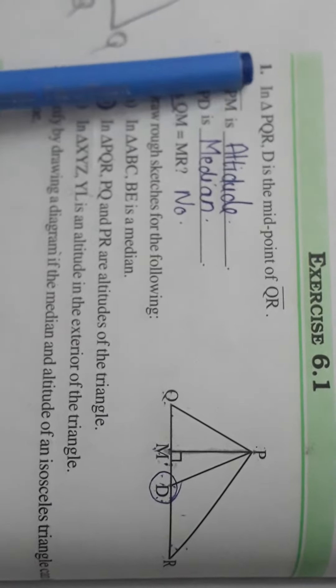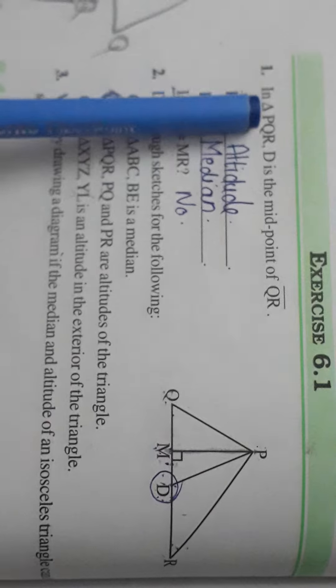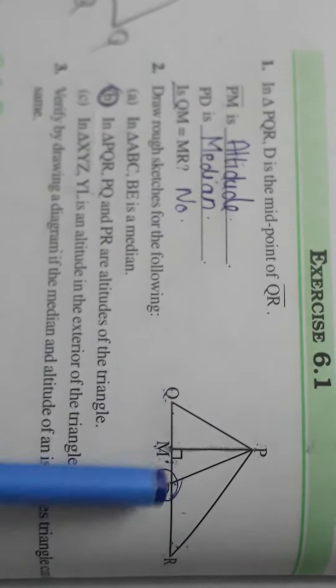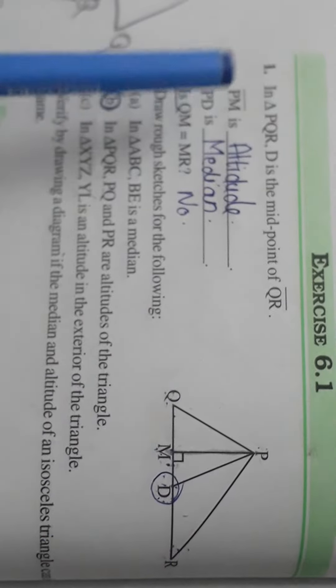So in the first question they are saying in triangle PQR, D is the midpoint of QR. Then there are some questions.